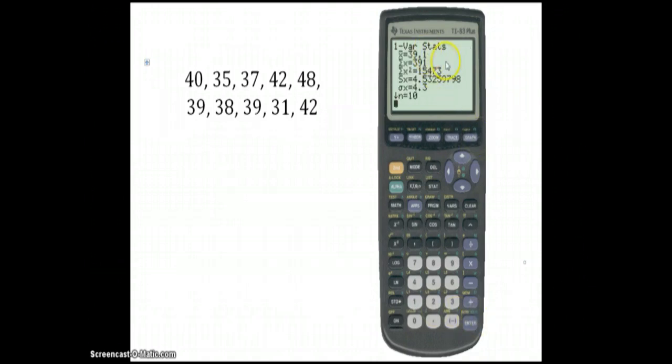Here is the information that we need. The mean, the unbiased estimator for the mean is 39.1 given by X bar. The standard deviation we're looking at is SX, which is 4.53259798. So the variance is that number squared.